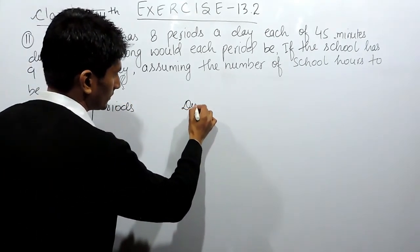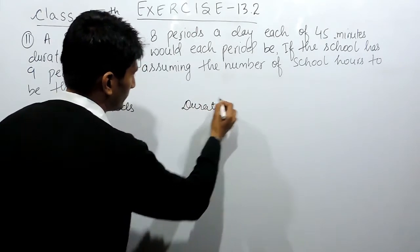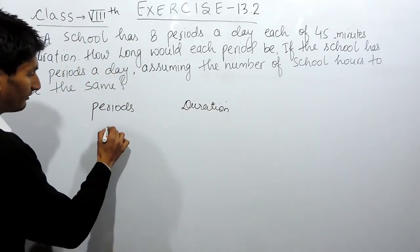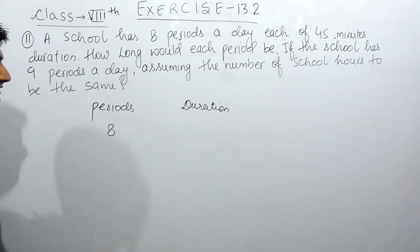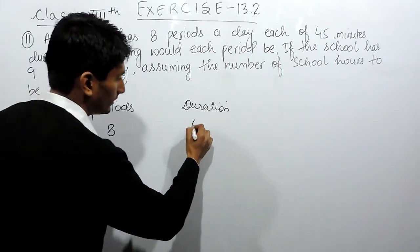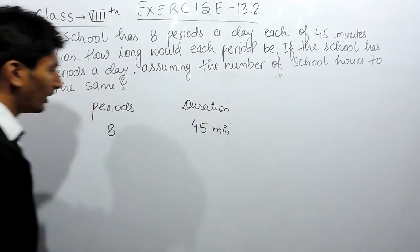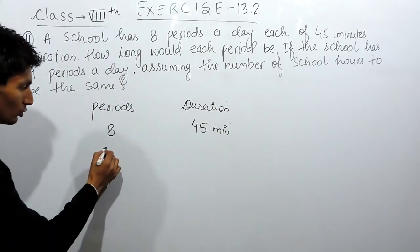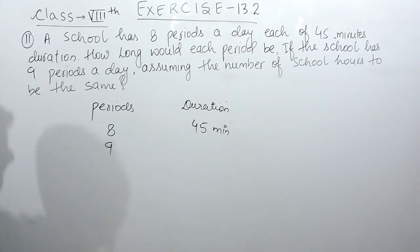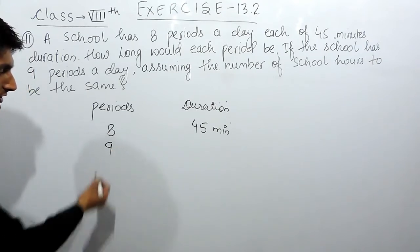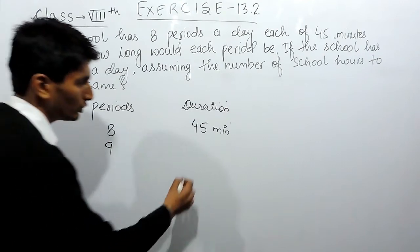It is given that if a school has 8 periods, each period is of 45 minutes. Now, if the same school increases the number of periods by one, which is now 9 periods, you have to find the duration of each period.